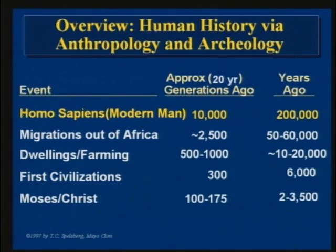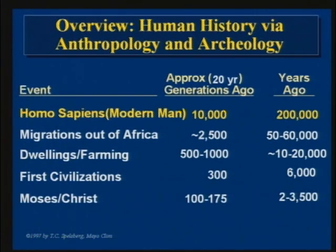Both physical anthropology and molecular anthropology have dated humans' origins back in Africa about 200,000 years ago — Homo sapiens. This represents about 10,000 generations in a brief 20-year generation period.